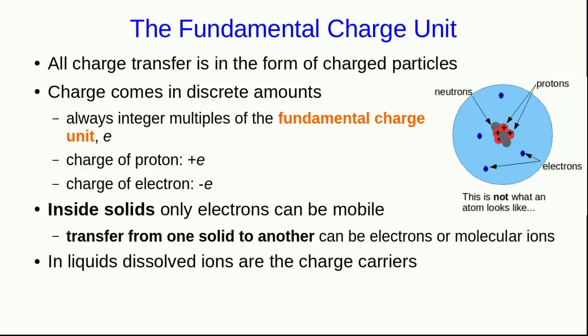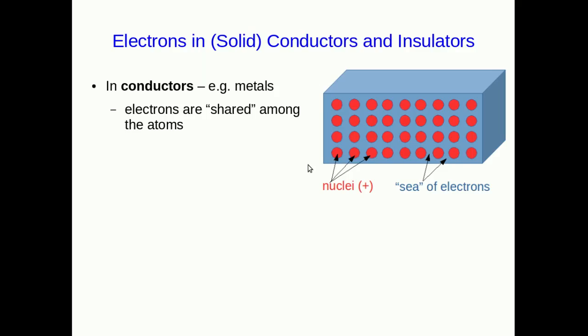In liquid, the charge carriers are dissolved ions, and the liquid will always contain both positive and negative dissolved ions. Whether or not an object is a conductor or an insulator is determined by how charge moves around, and in solids that mostly means how electrons move around.